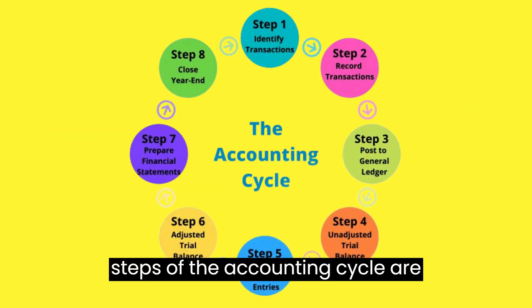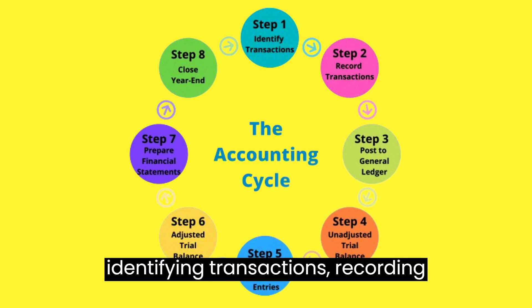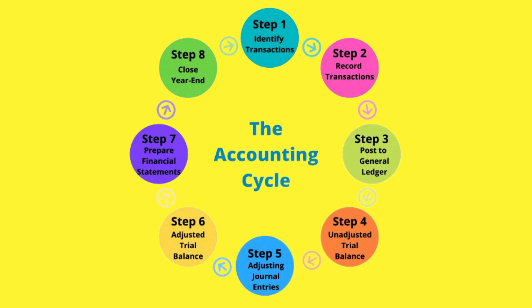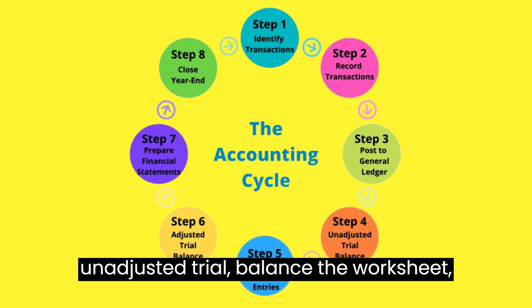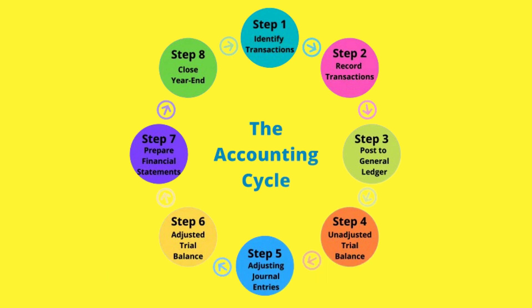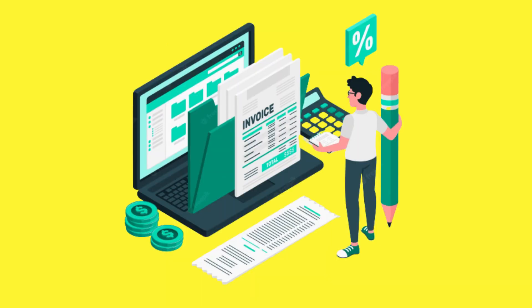The eight steps of the accounting cycle are: identifying transactions, recording transactions in a journal, posting, the unadjusted trial balance, the worksheet, adjusting journal entries, financial statements, and closing the books.